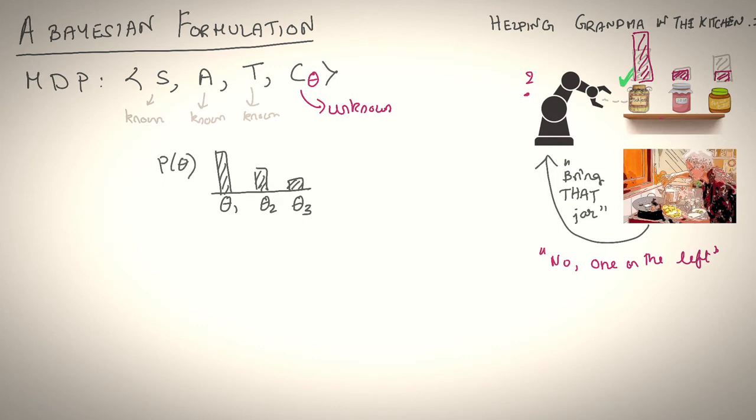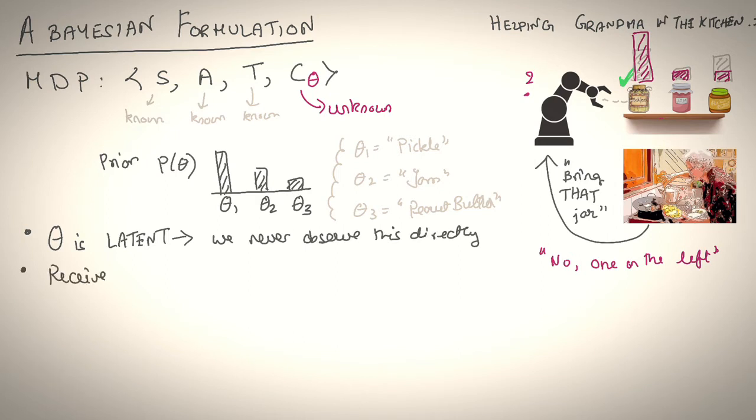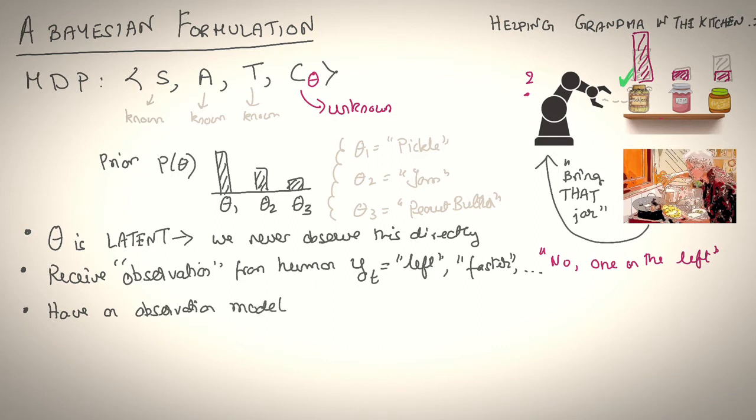For example, in this setting, the parameter theta could be which of the three jars did grandma want. Theta one could refer to the pickle jar, theta two to the jam jar in the middle, theta three to the peanut butter jar. The key characteristic is that theta is latent. We never observe theta directly. Instead, what we get is observations from a human partner.